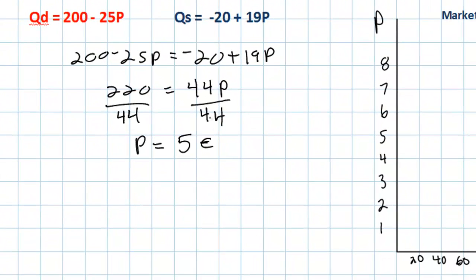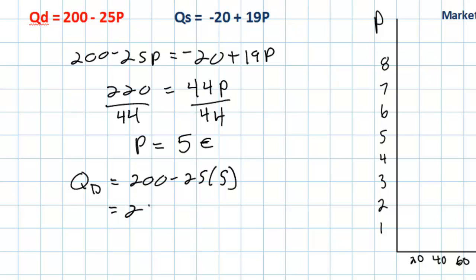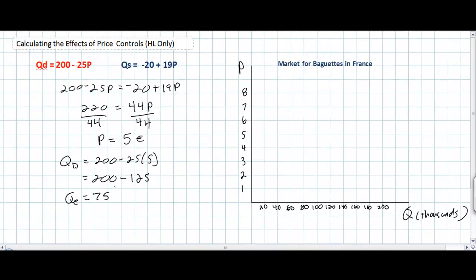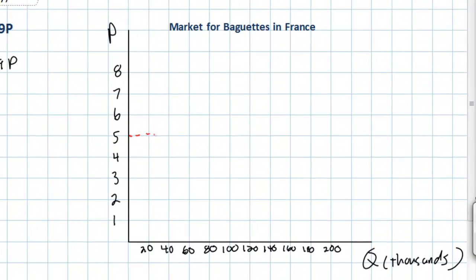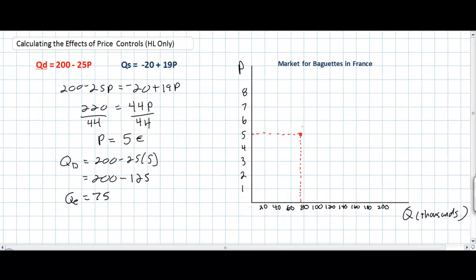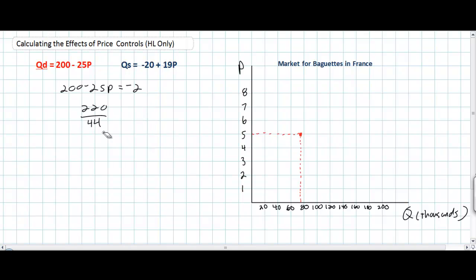In a moment we'll draw our supply and demand curves and see this equilibrium price on the graph. But first let's find the equilibrium quantity. We plug 5 euros into the demand equation: Qd equals 200 minus 25 times 5, which is 200 minus 125. The equilibrium quantity equals 75 baguettes. Let's plot that on our graph — an equilibrium price of 5 and an equilibrium quantity of 75.